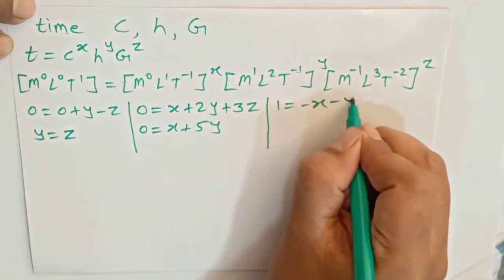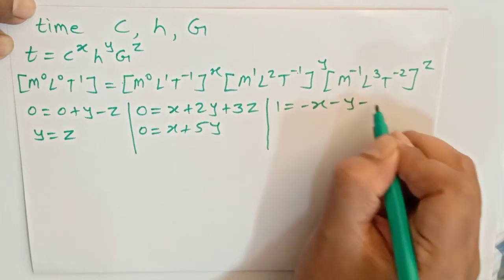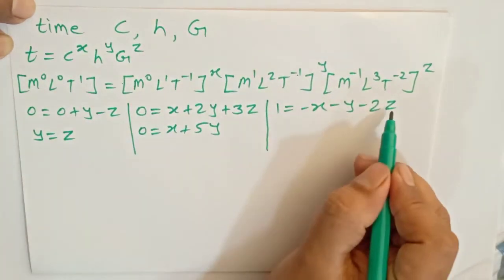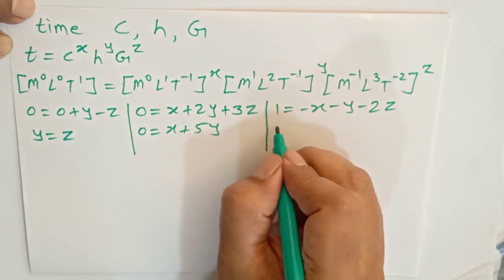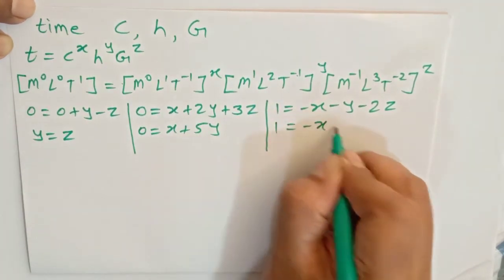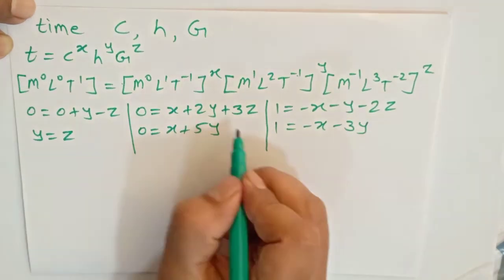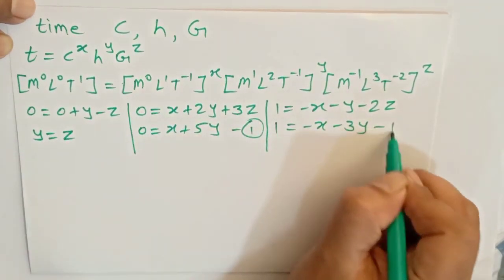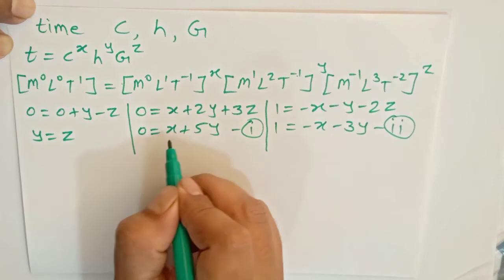Next we compare T. Here 1 equals minus x minus 1 times y, minus y, then minus 2 times z, minus 2z. Now we will write z in place of y, so 1 equals minus x minus 3y. Let's say this is equation 1 and the previous is equation 2. We will add equation 1 and equation 2.